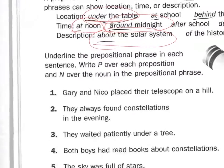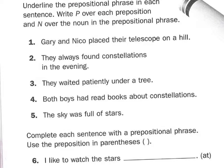Now that we've talked about that, let's look at our exercises. We are putting a P over the preposition and an N over the noun in the prepositional phrase. Gary and Nico placed their telescope on a hill. The preposition is 'on,' the noun is 'hill,' and the prepositional phrase is 'on a hill.' Number two: they always found constellations in the evening. The preposition is 'in,' the noun is 'evening,' and the prepositional phrase is 'in the evening.'